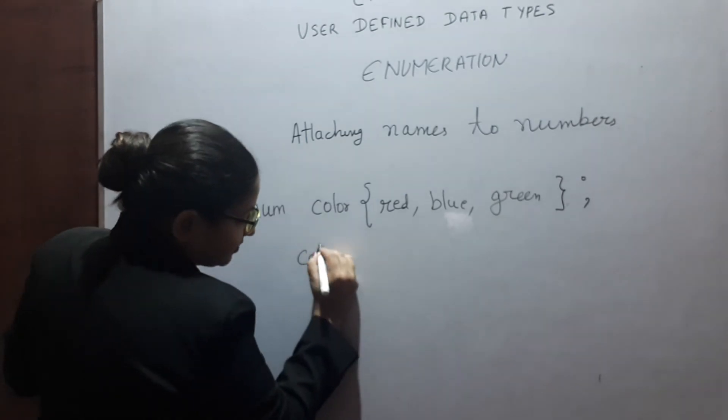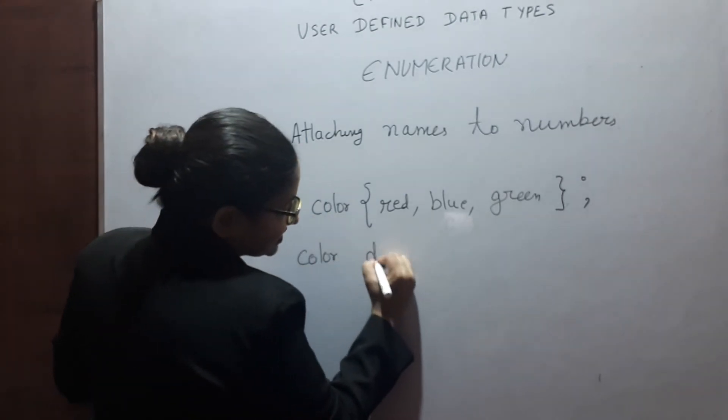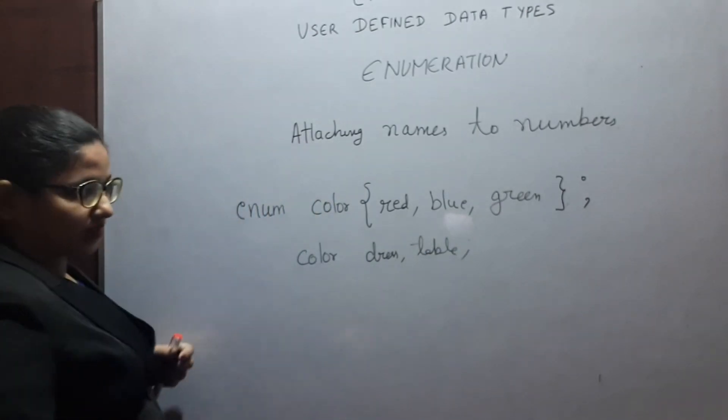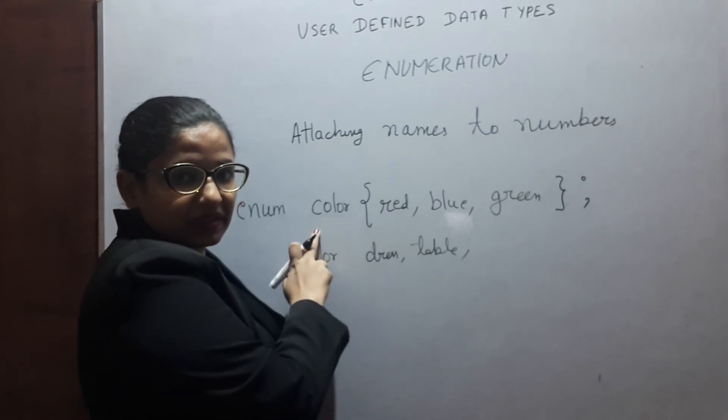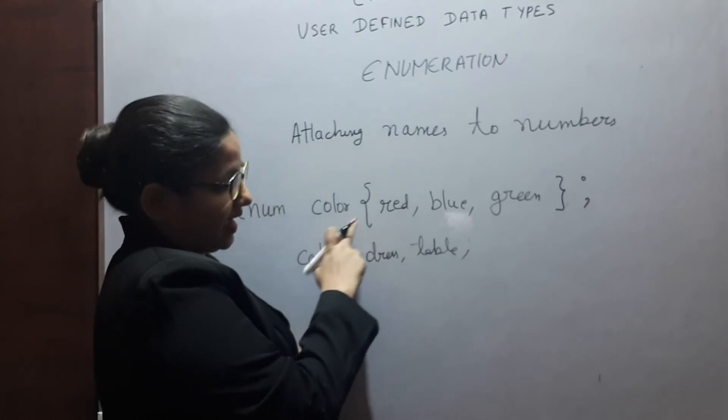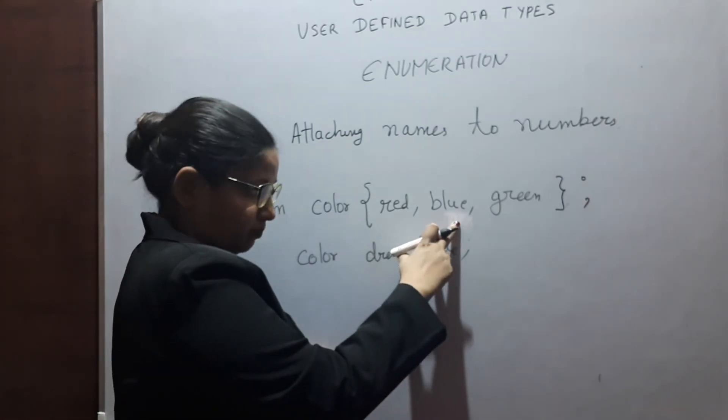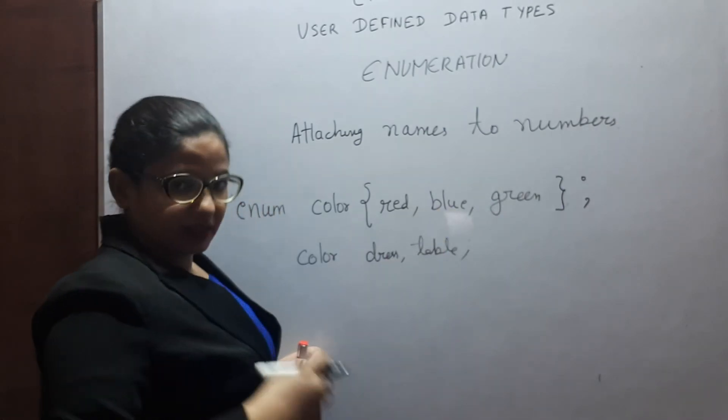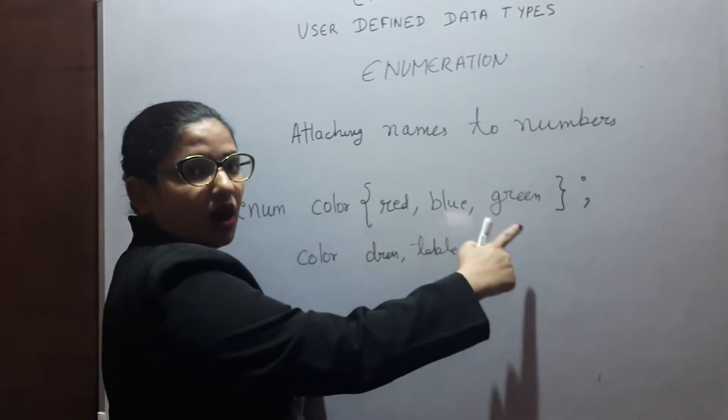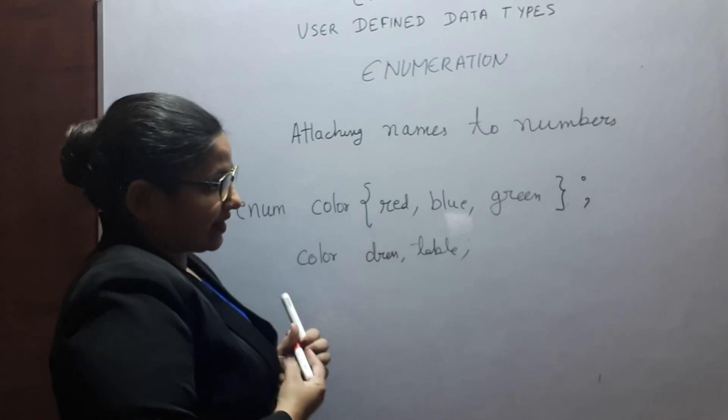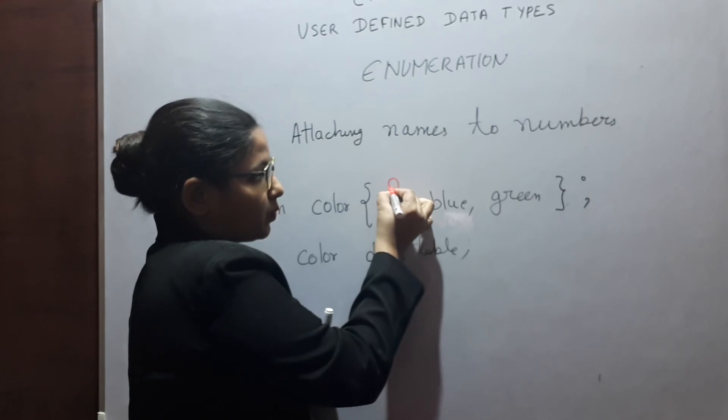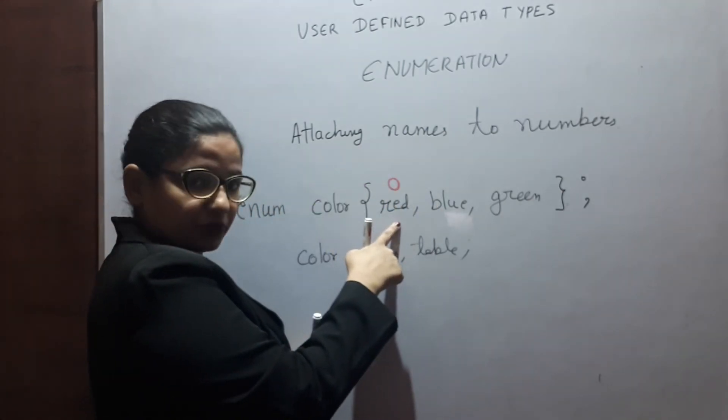You can create variables of color enum as well. Color dress, table, whatever you want. What this statement means is color can have the value as red, blue, green. Color can take the value red, blue or green. Red, by default, will be having the value zero. You are attaching name to numbers.